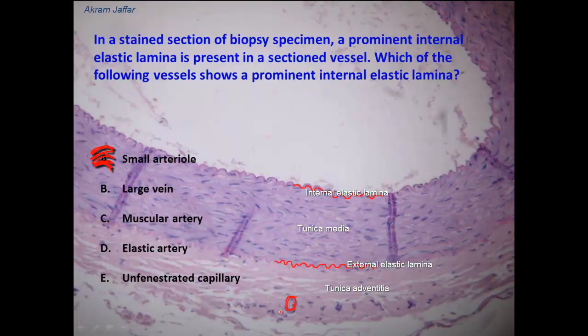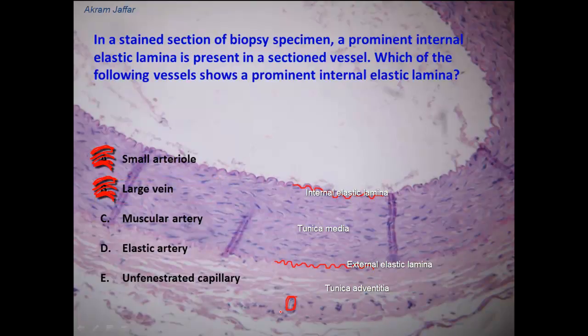An internal elastic lamina might be seen in a large arteriole, but not in a small arteriole. In a large vein, we will not be able to see an internal elastic lamina. In fact, in large veins like the superior vena cava or inferior vena cava, some elastic fibers are located in the tunica adventitia.